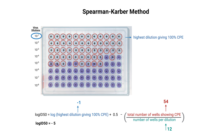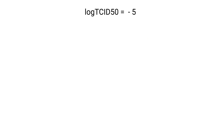Finally, using the appropriate formula, we calculate the logarithm of the infectious dose 50. With our data, this produced a log TCID-50 of 5. So, we've determined that the log TCID-50 is minus 5.